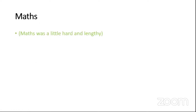The last section was mathematics. Almost 50% — the majority of aspirants — fear the mathematics section. As per student responses, this time math was a little bit tough. It was a little bit hard and the questions were a little bit lengthy. That was the feedback from students.